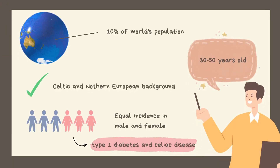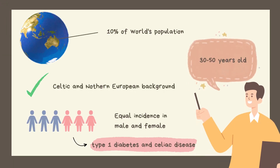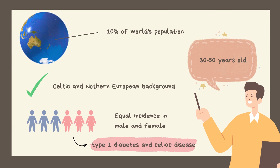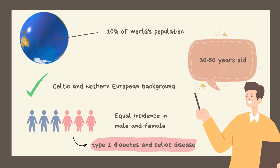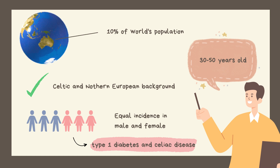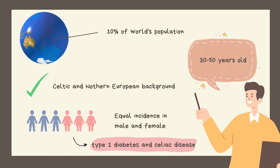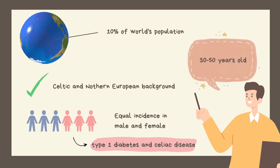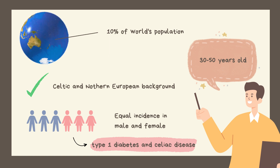Rosacea is a common condition affecting up to 10% of the world's population. The onset is usually between the ages of 30 to 50, but it can occur at any age. Rosacea more commonly affects lighter Fitzpatrick skin types, particularly those with Celtic and Northern European background, and is less common in people with darker skin types, Fitzpatrick 5 and 6. The occurrence in both females and males is equal.